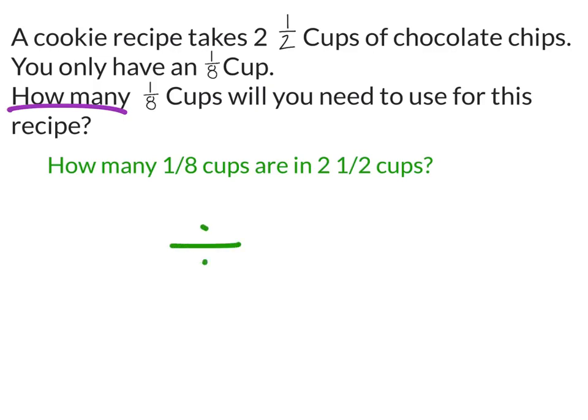And the reason I point this out is because it's a division problem. How many of these eighths - so again that would be our divisor - are in two and a half? So it's really two and a half divided by one eighth.